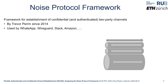The Noise Protocol Framework is a framework for defining and deriving patterns for establishing confidential and authenticated two-party channels. It has been developed by Trevor Perrin since 2014. Due to its lightweight and modular nature, it has been adopted and deployed in WhatsApp, WireGuard, Slack, and Amazon, protecting the communication of multiple millions of communications per day.